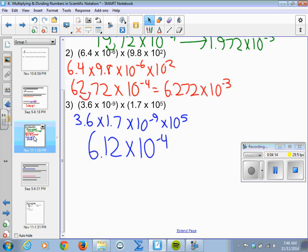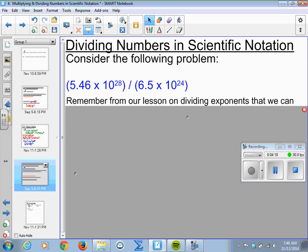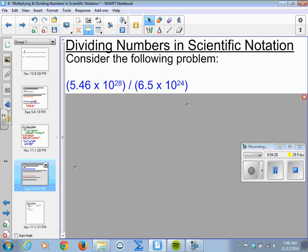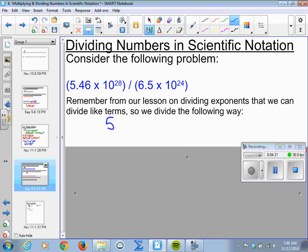Now the division. So look at this. We have 5.46 times 10 to the 28th power divided by 6.5 times 10 to the 24th power. When we divide, we can set it up as a fraction right over each other so the terms get straight up from each other.